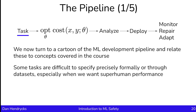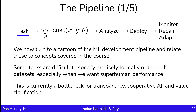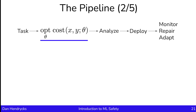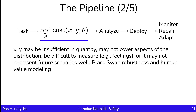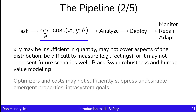Starting with tasks: some tasks are difficult to specify precisely, formally, or through datasets — especially when we want superhuman performance. This is currently a bottleneck for tasks such as transparency, cooperative AI, and value clarification because those tasks aren't yet fully formed. Moving further along the pipeline: X and Y may be insufficient in quantity, may not cover aspects of the target distribution, could be difficult to measure, or may not represent future scenarios well — touching on black swan robustness and human value modeling. Optimizers and costs may not sufficiently suppress undesirable emergent properties, which relates to emergent properties and inter-system goals.